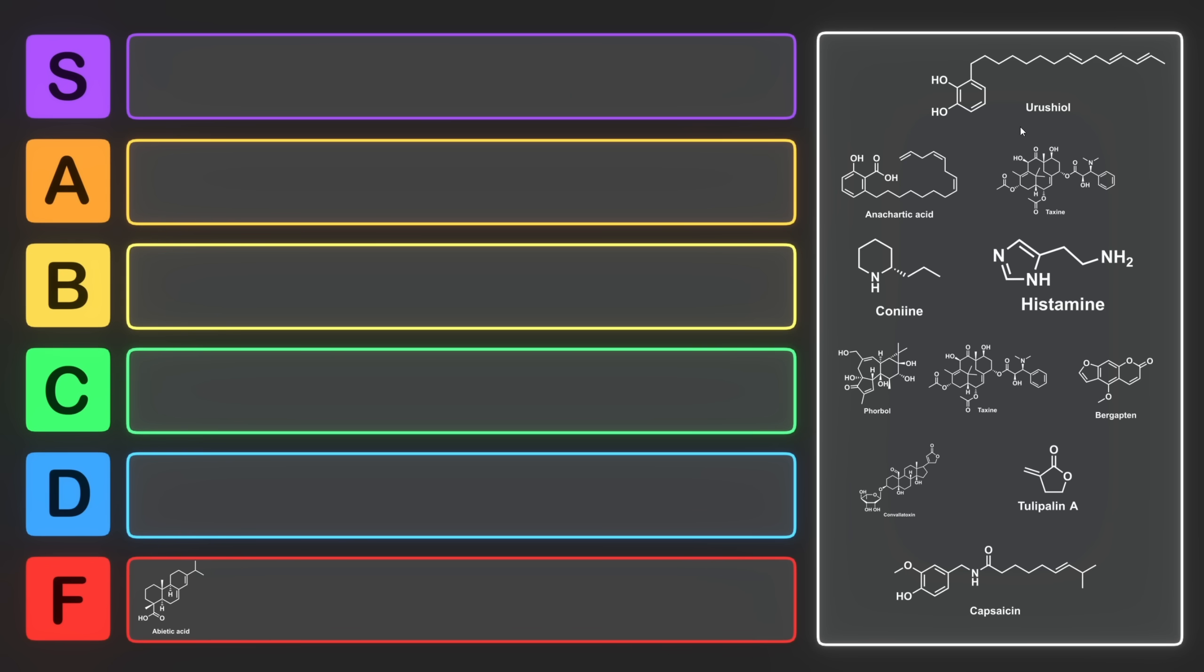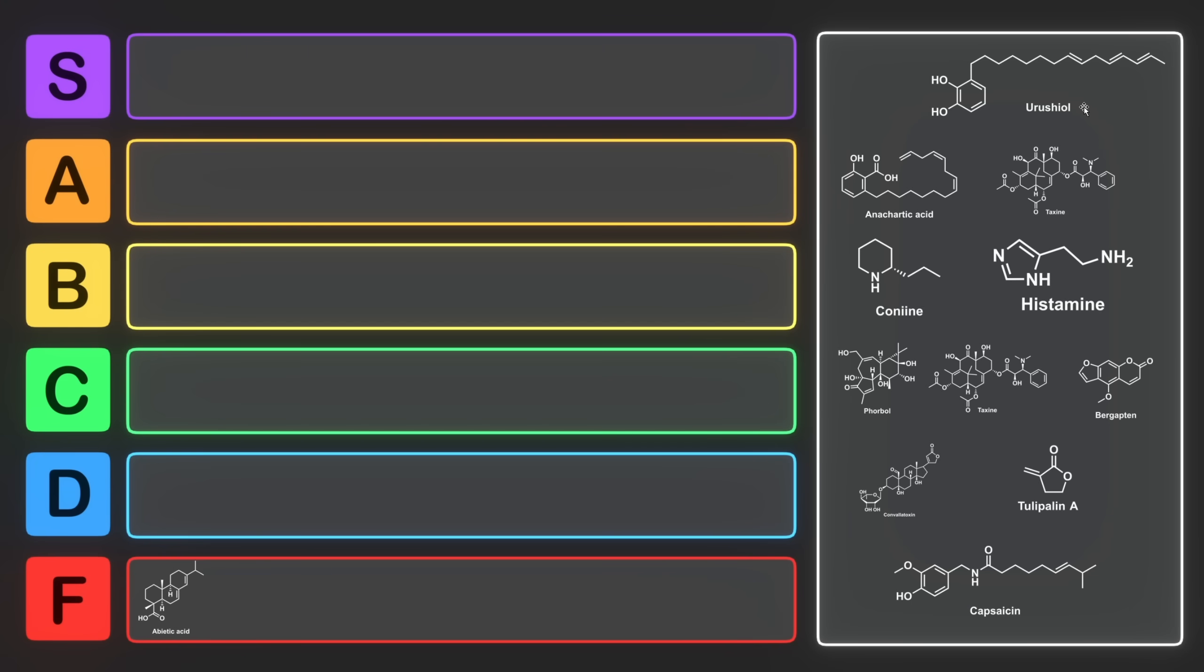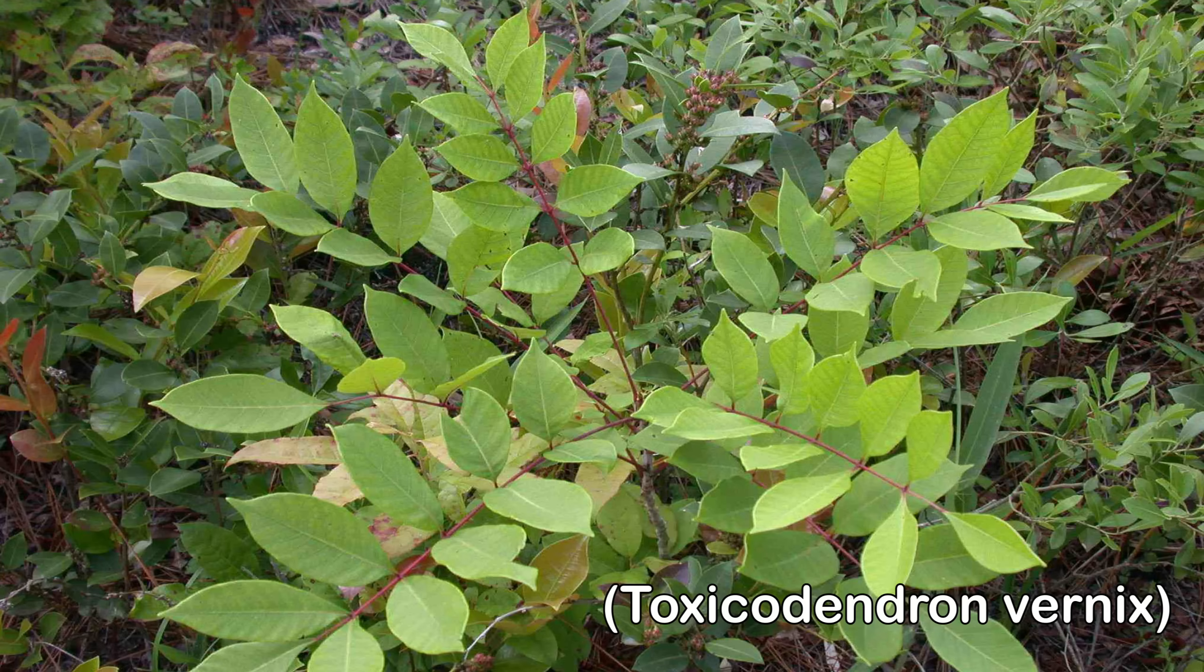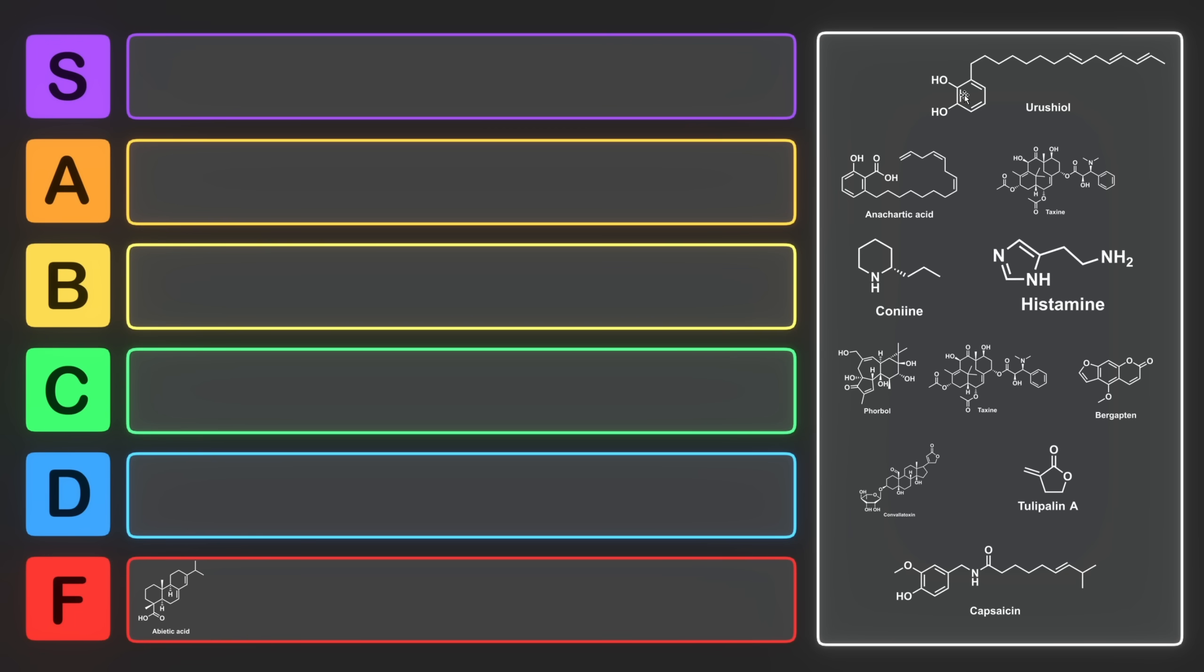But the next molecule isn't so fine. The next molecule is an example of a urushiol. Urushiol is a compound best known as the irritant in poison oak, poison sumac, as well as poison ivy. Urushiols have a catechol motif, and this side chain, which is this long alkyl group, can have various alkenes and various lengths, depending on the plant that it comes from.